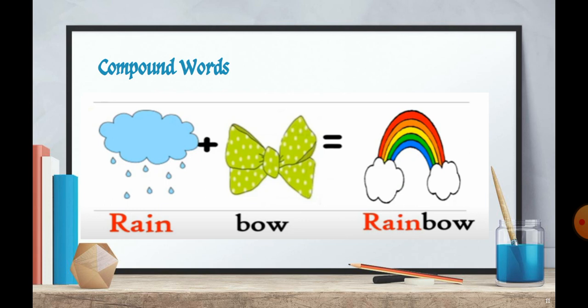Rain. There is one word rain and the other word is bow. So when we join these two words, we will get the word rainbow. That appears on the sky after raining.